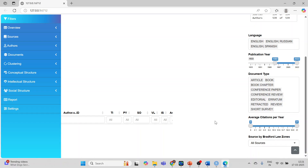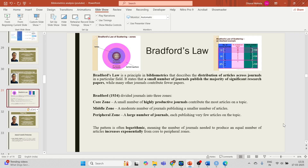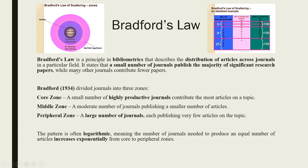What is Bradford's Law? Let's try to understand. Bradford's Law is a principle in bibliometrics that describes the distribution of articles across journals in a particular field. It states that a small number of journals publish the majority of significant research papers, while many other journals contribute fewer papers. For any discipline, we have a nucleus zone, zone 1, and zone 2.